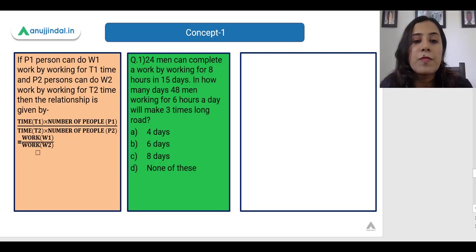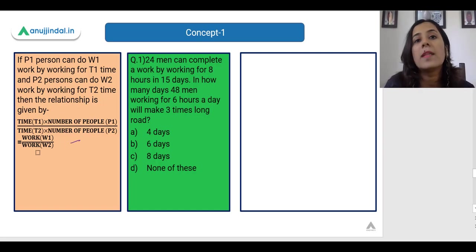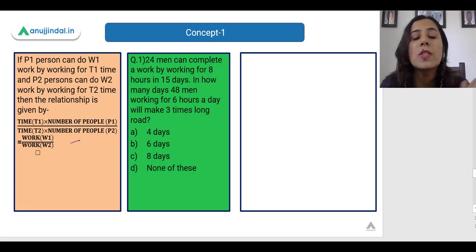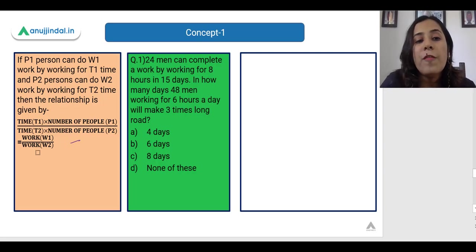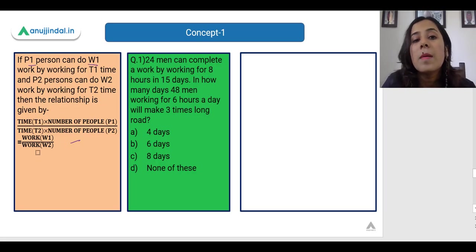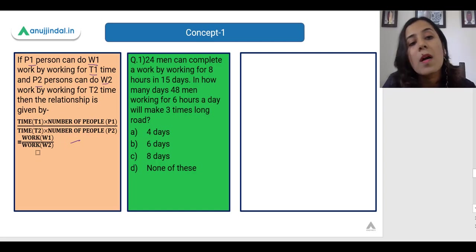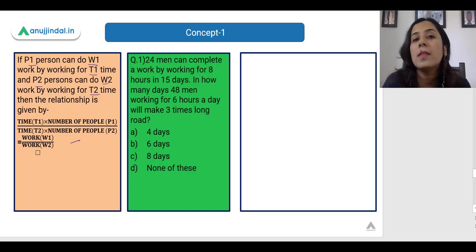This is the first formula, which I have already taught in previous videos while explaining the concept, but I'm going to repeat it since it is also a shortcut. If P1 persons can do W1 work by working for T1 time, and P2 persons can do W2 work by working for T2 time, then the relationship is given by this formula: P1 × T1 / W1 = P2 × T2 / W2.